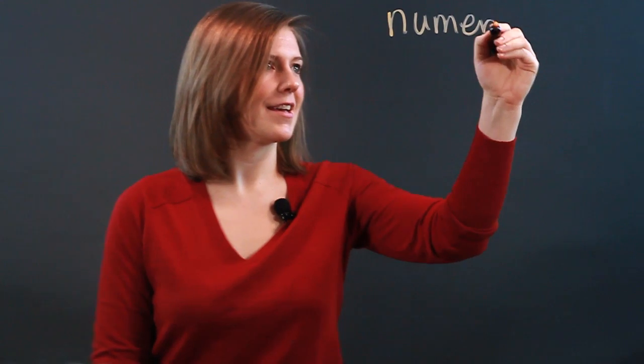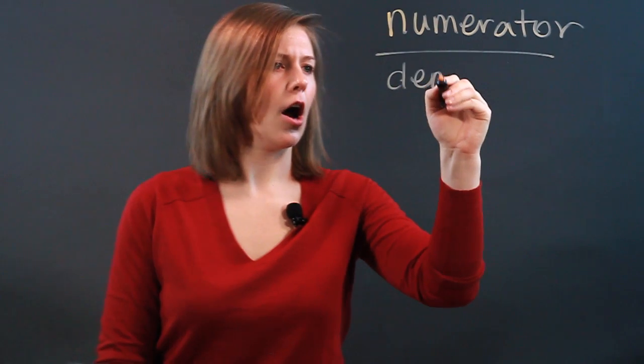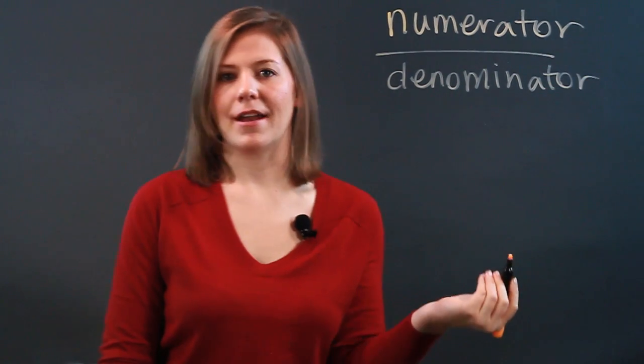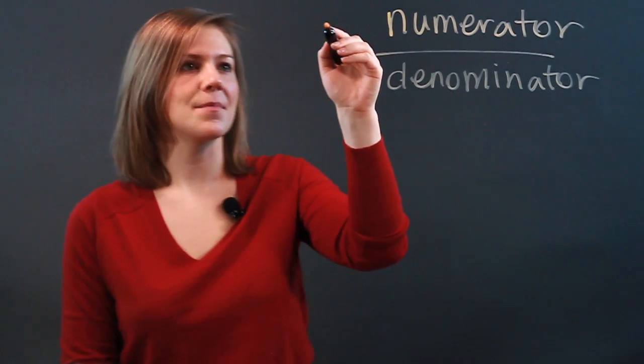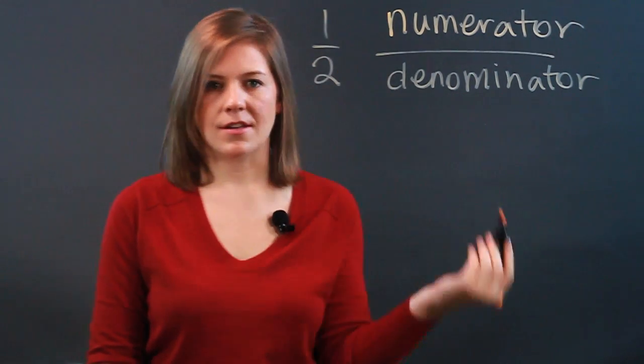A denominator is what we see in a fraction on the bottom of the fraction. So we have the numerator on the top and the denominator on the bottom. If we were looking at something like one half, one is our numerator, two is our denominator.